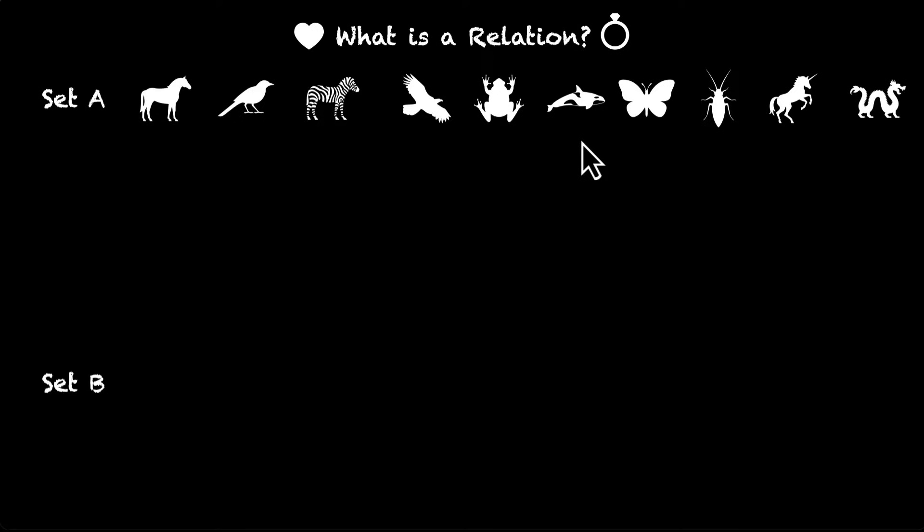So these are some creatures that you can see that they are part of set A. What we have in set B is land, water, air, and mind. We have four elements: land, water, air, and mind, because why not?